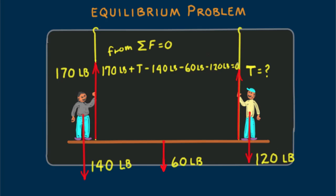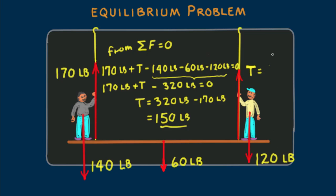A little bit crowded here. 170 pounds plus T, minus, combining the downward values, 320 pounds, equals zero. So we see that T equals 320 pounds minus 170 pounds, that's equal to 150 pounds. And we write T equals 150 pounds.